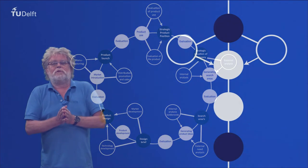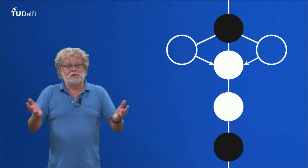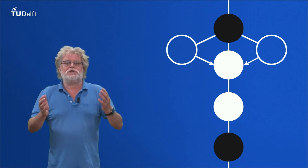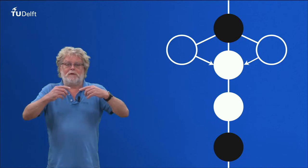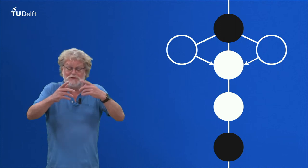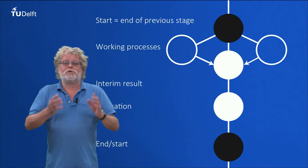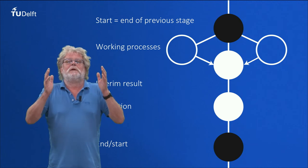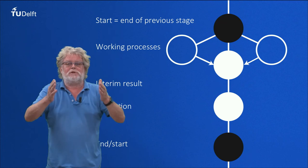Each stage itself consists of a series of steps. The five stages are visually structured the same. All end with an evaluation and reflection step, in which it is decided to jump over to the next stage, or if the quality of the progress is too low, to redo this stage. All stages start with a starting situation, which is equal to the end result of the previous stage.